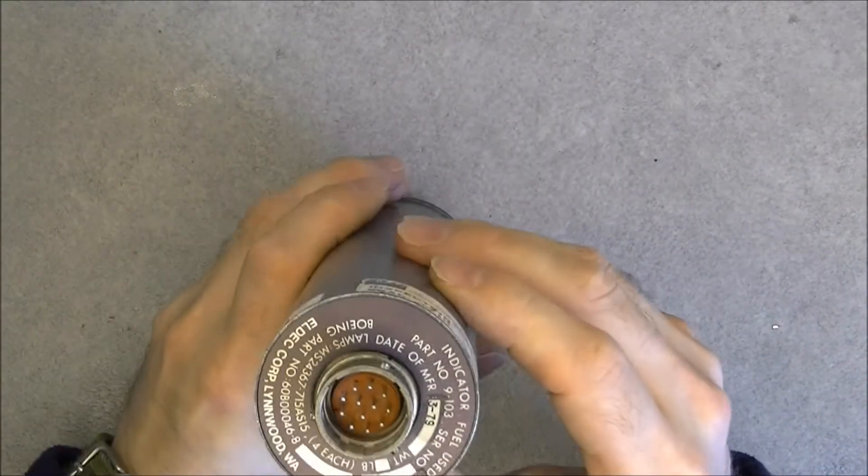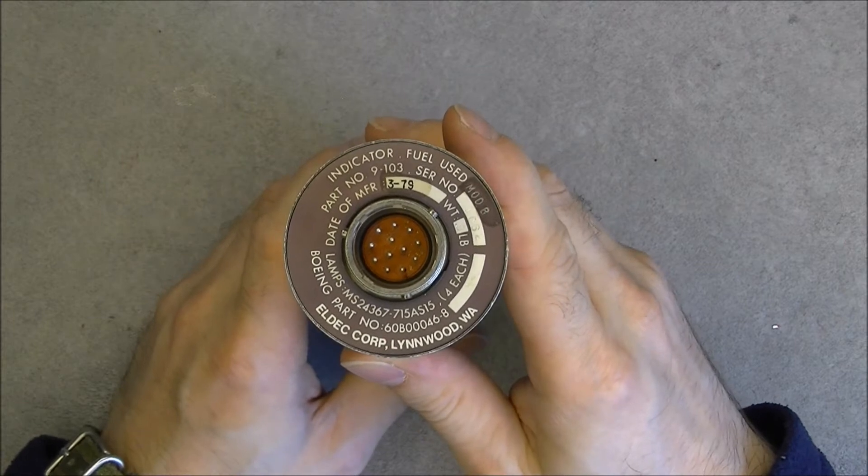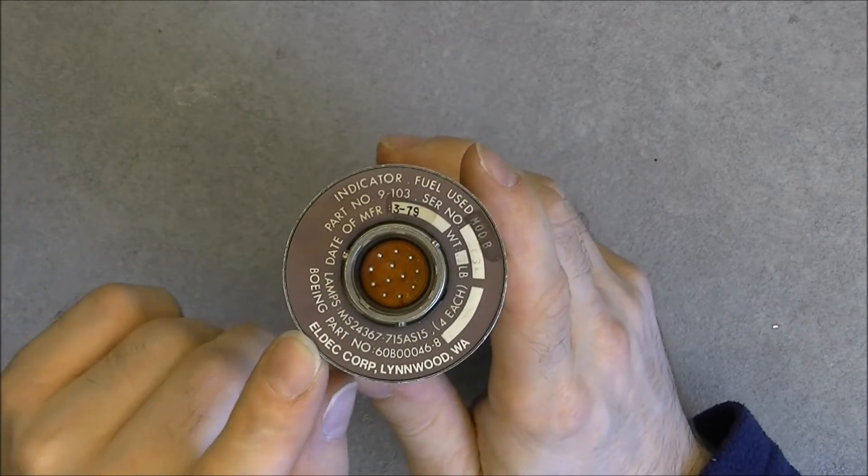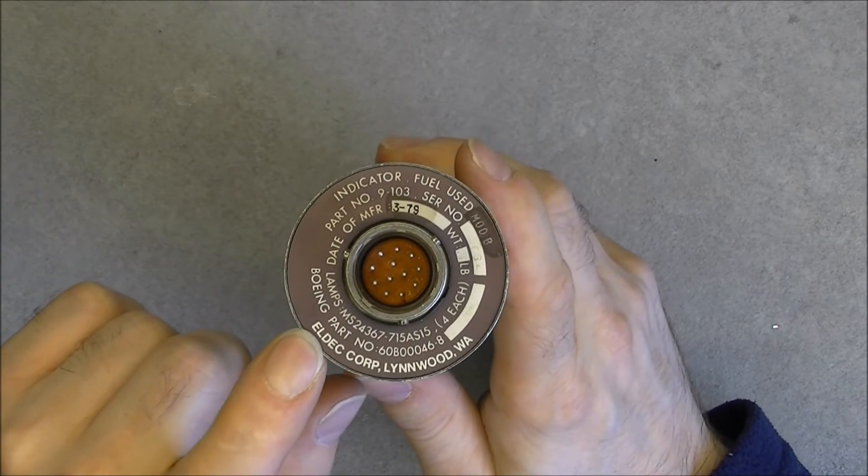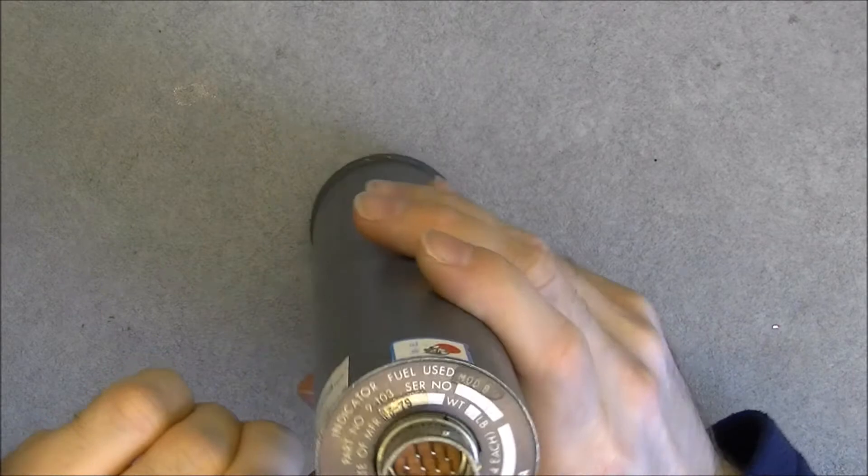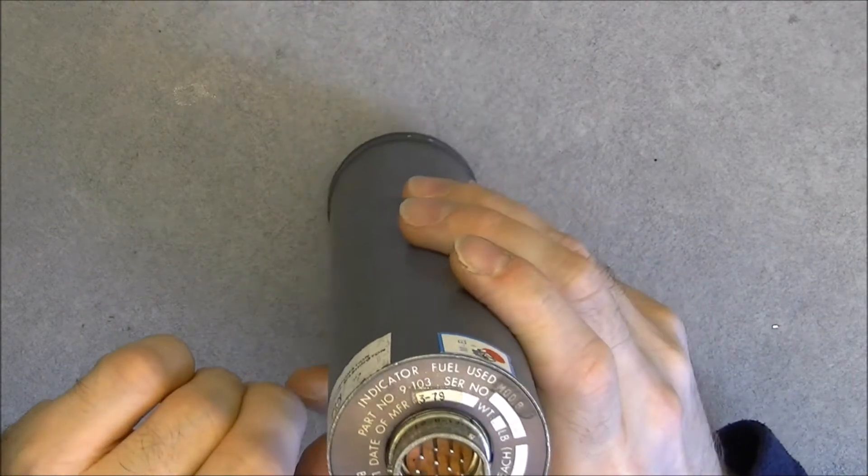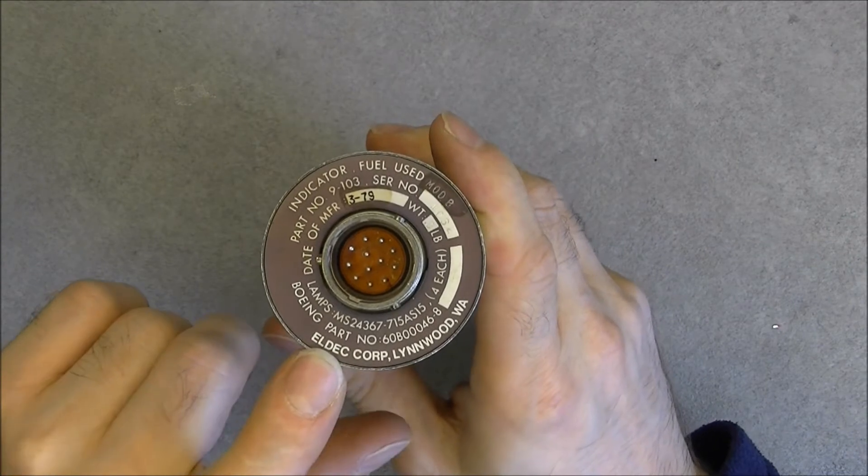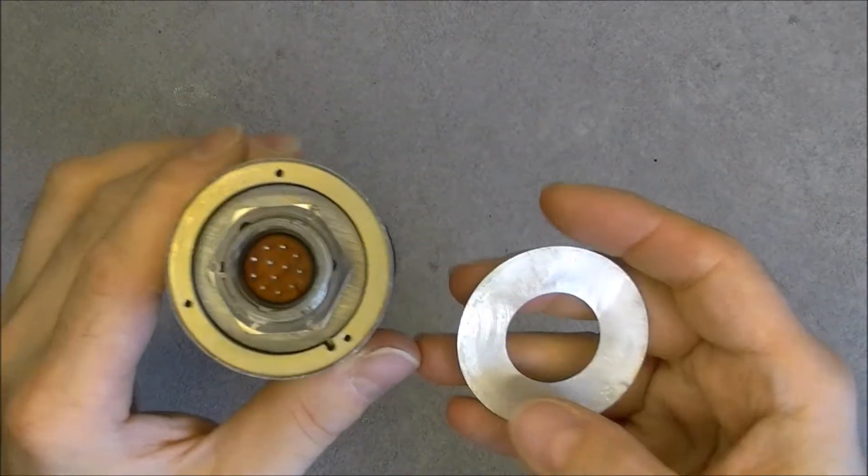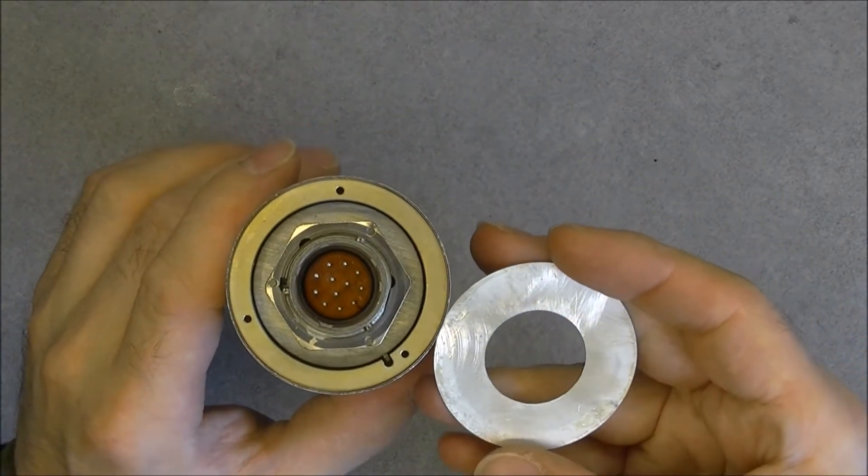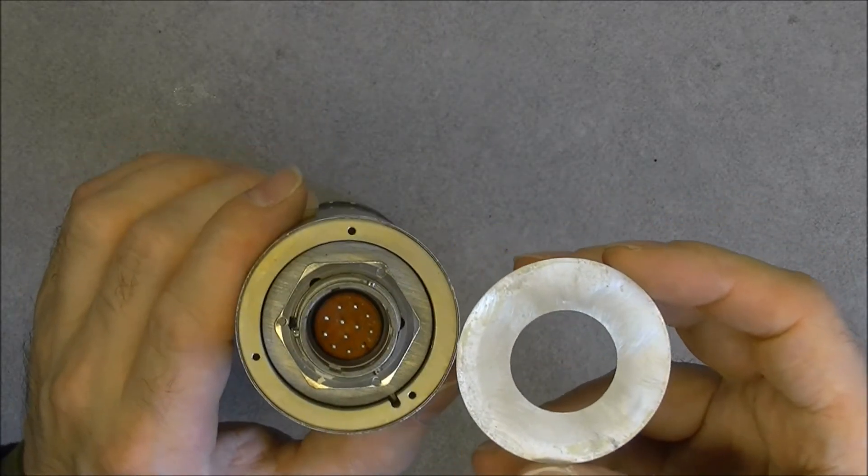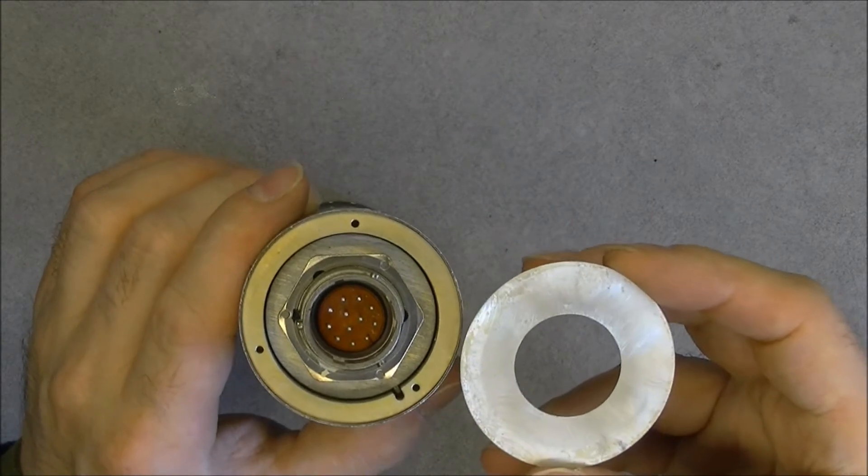It is made by the Eldec Corp in Lynnwood, Washington. Actually the company is still existing and they still make aircraft parts. We have the serial number 1062 on this, and a Boeing part number of course. On this one, in fact the manufacturer plate was very lightly glued at the back and it did come loose, so I will probably reattach it with double sided tape or something like this.